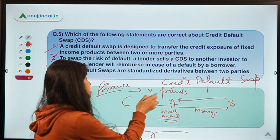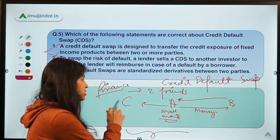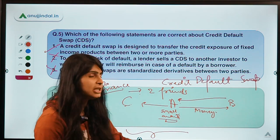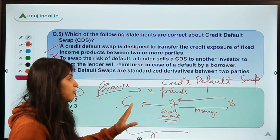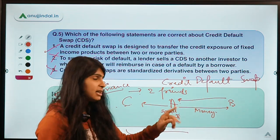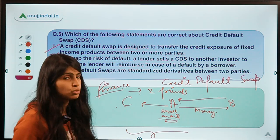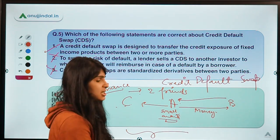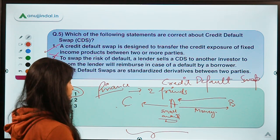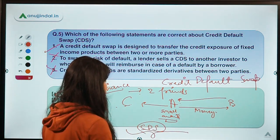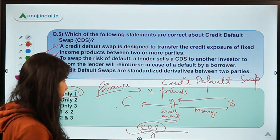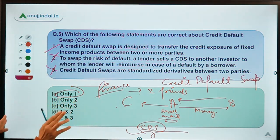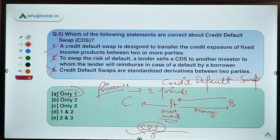This system is called a Credit Default Swap because they are swapping or exchanging their credit positions. If A faces credit risk, he hands it over to C, and C will reimburse A for all the money. What does C get out of it? If B pays back A, then C gets to keep the entire premium amount — just as a normal insurance works. So this system is known as a credit default swap.